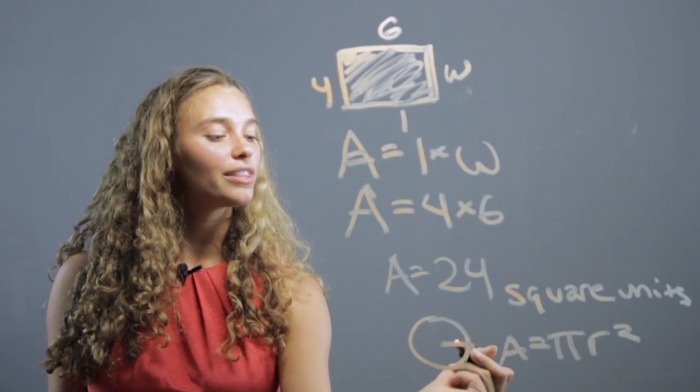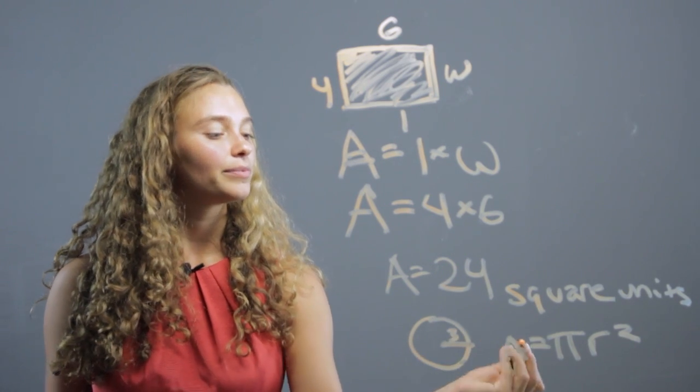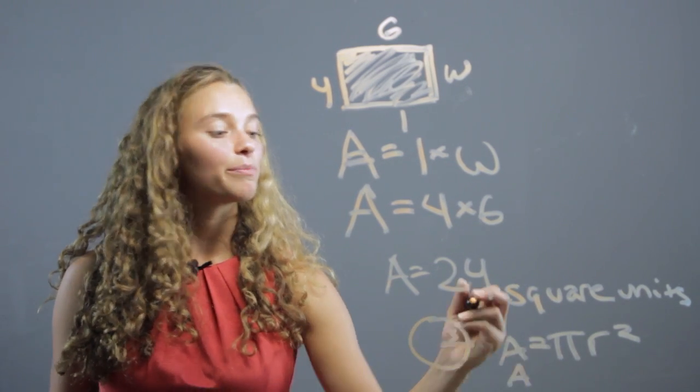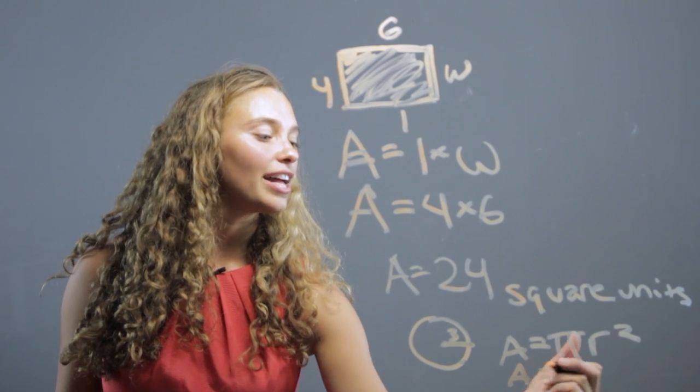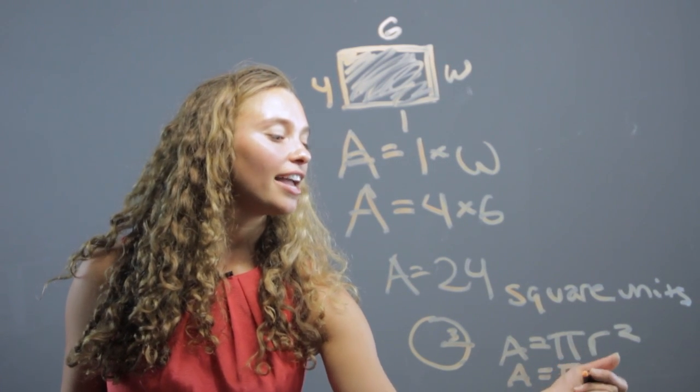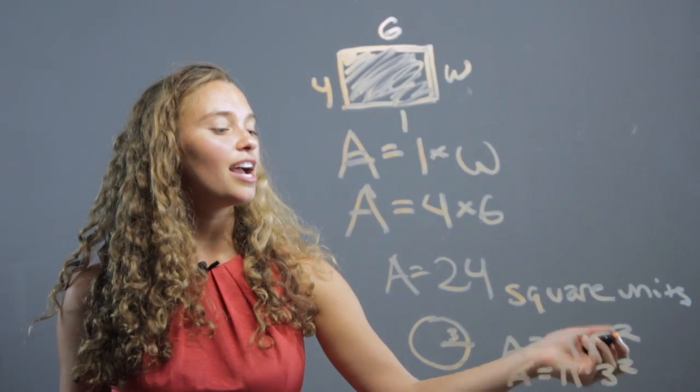So then when they know what the radius is, say the radius is 3, we again have them write the formula so they get it into their head. And then we know that's A equals pi times 3 squared. 3 squared is 9.